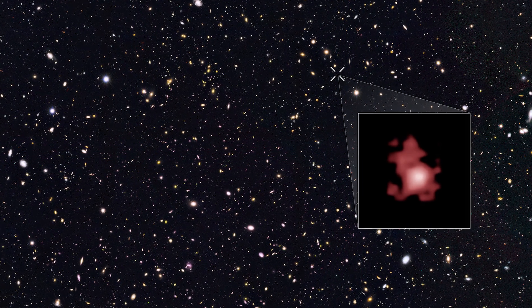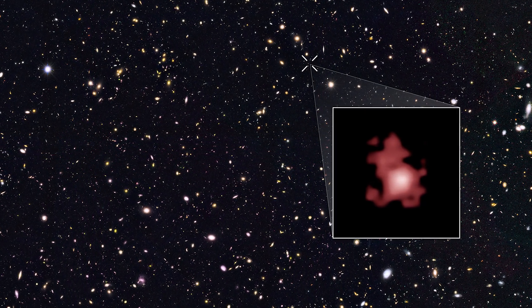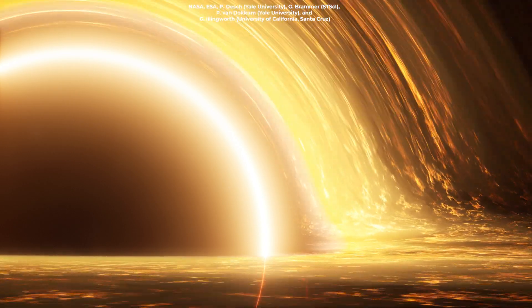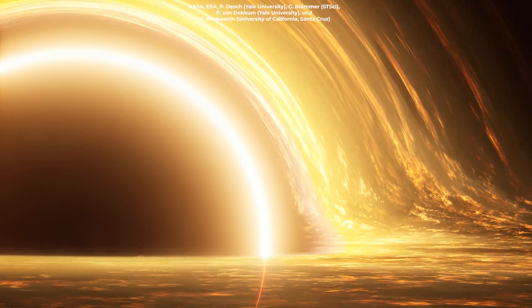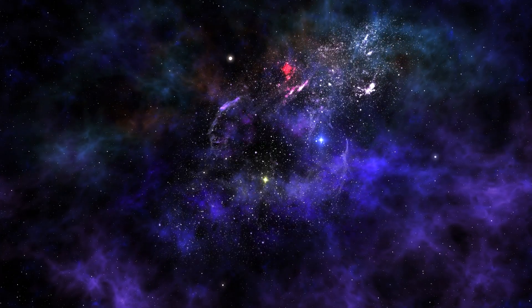Webb's infrared capabilities allow it to detect the dense gas and high-velocity winds associated with these black holes. In GNZ-11, astronomers observe signs of ionized chemical elements typically found near accreting supermassive black holes. These observations provide the first clear signatures that GNZ-11 hosts a rapidly growing black hole.